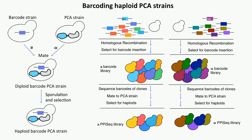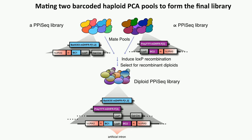Here is the detailed protocol. We first use homologous recombination to insert barcodes into yeast cells, then use sequencing to identify each barcode in the colony. Once we build the barcode strains, we mate them with the PCA strains one by one so we know which barcodes tag which PCA. Then we produce diploid cells, induce sporulation, and select for haploid barcoded strains. We pool those haploid barcoded strains, mate the two pools, and induce LoxP recombination in the diploid cells. Because we include a LoxP site next to each barcode, the LoxP recombination brings the double barcodes together along with the two DHFR fragments. An artificial intron between the barcodes helps express a complete DHFR, which acts as a selection marker for the double barcode strains.